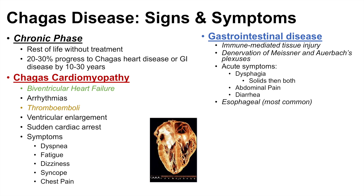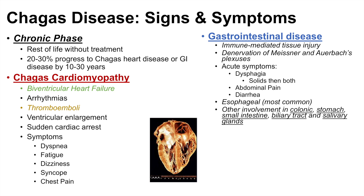Gastrointestinal disease typically only occurs in the chronic phase. Esophageal involvement acts like achalasia in patients. Other areas of the gastrointestinal system can also be affected, including the colon, stomach, small intestine, biliary tract, and salivary glands.